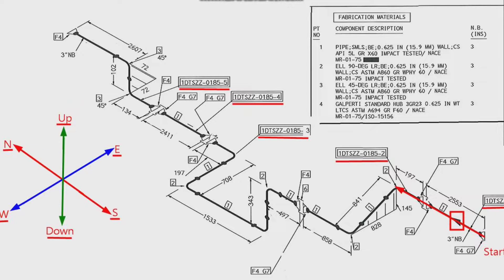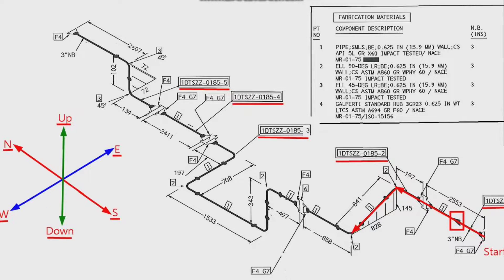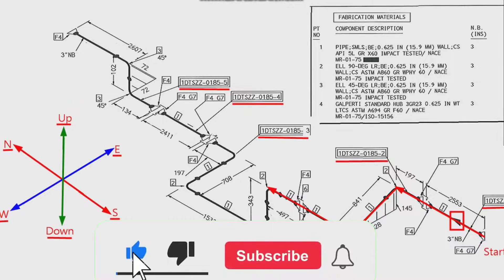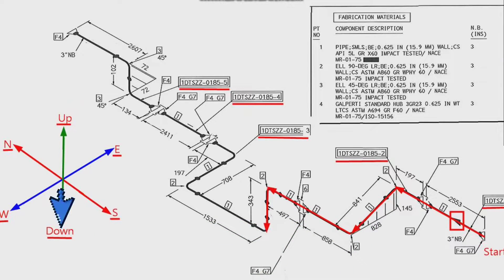The pipeline moves first down along the dashed lines 145mm and then to the west along the dashed line 828mm. Then the pipeline travels to the north direction. At this point the pipe travels downward. Then the pipeline travels to the north direction again.